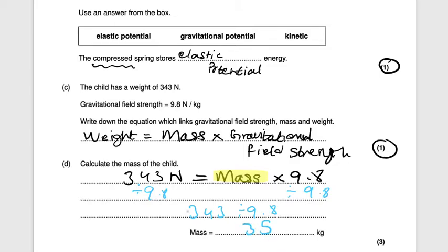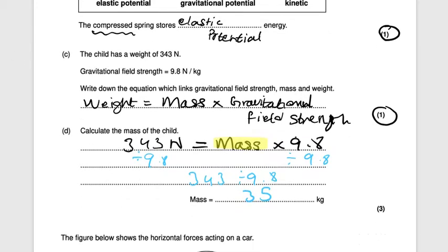So the mass of the child is 35 kilograms. That is worth three marks.